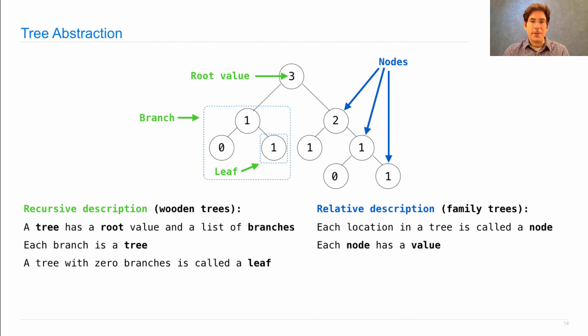Each node has a value, and each one of those is the root value of some other tree. Because this tree is made up of trees, and those trees are made up of trees. But sometimes we want to talk about this whole tree and all of its contents. So we can talk about all of its nodes, those are its locations, or we can talk about all of its values, those are all the numbers that you see on the screen.